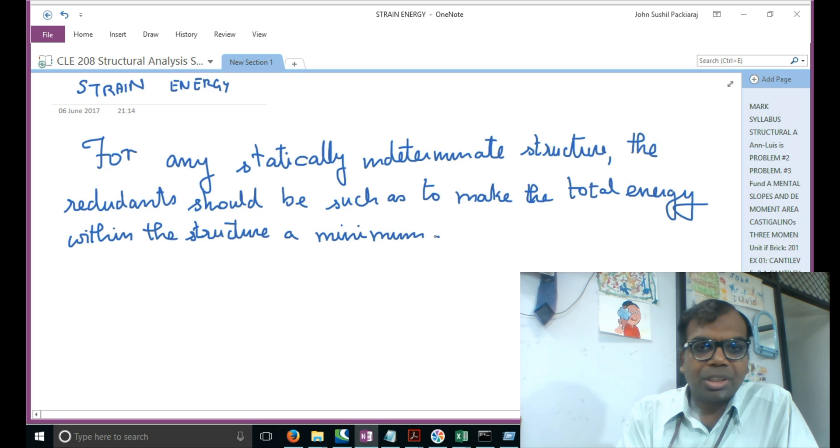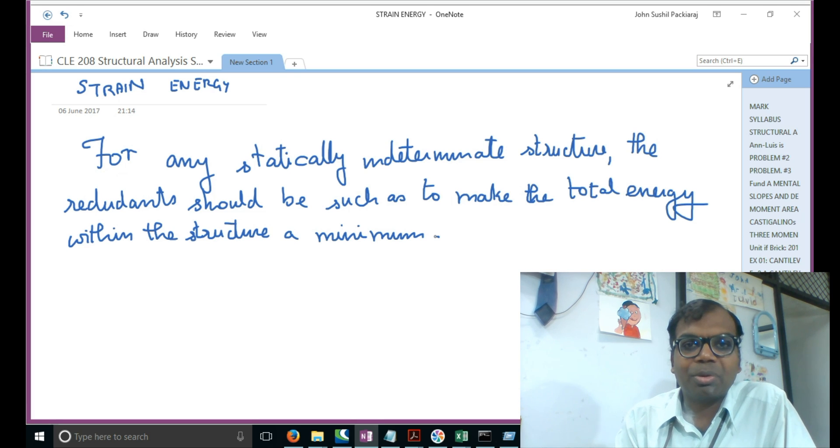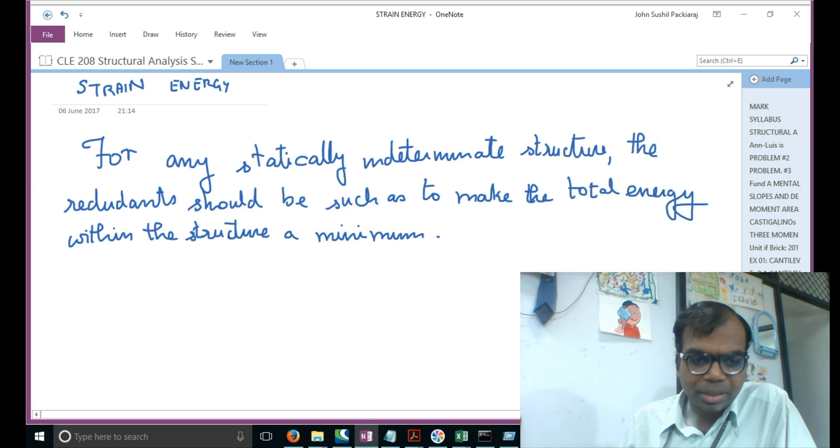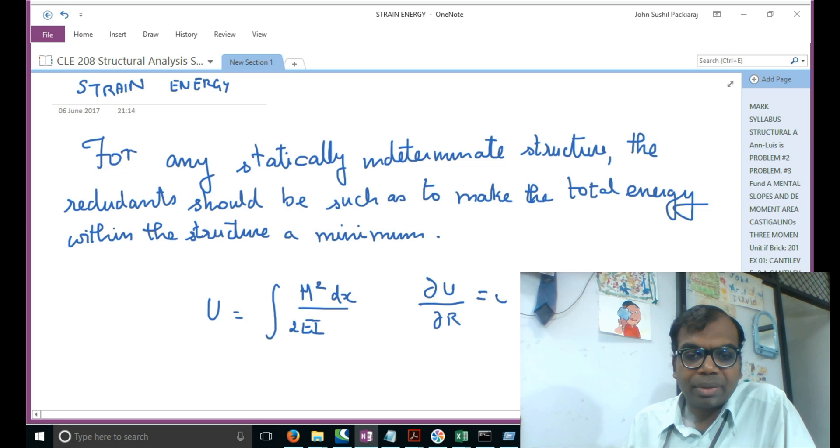This is how the theorem of least work goes - the total energy because of the redundants should be equal to zero. This brings about a very interesting part. The energy U equals the integral M squared dx by 2EI. According to this, we need to make the redundant force such that when we differentiate this energy with reference to it and equate it to zero. If R is the redundant reaction, we differentiate with respect to R. This is better understood when we go through a problem.